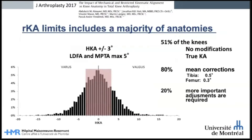This limit corresponds to the mean value plus 2 degrees. Following the first two RKA principles, in 51% of the cases you will perform true KA without modifying patient anatomy. For another 30% of cases, you will need to adjust patient anatomy by less than 1 degree. Now we need to discuss how to perform the anatomical modifications for the 20% of cases left.